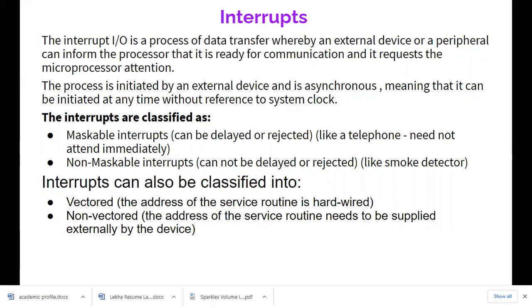Interrupts are broadly classified into two types. The first classification is maskable and non-maskable. Maskable interrupts can be prevented from occurring to some extent — if I don't want a particular device to disturb the microprocessor at a particular time, I can delay or even reject it. Like a telephone call: if you don't want to attend, you can just ignore it. That is a maskable interrupt.